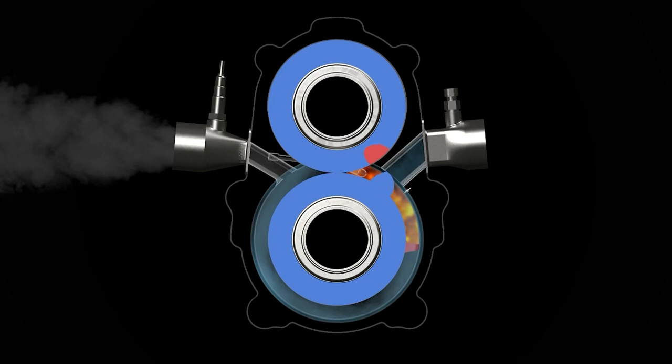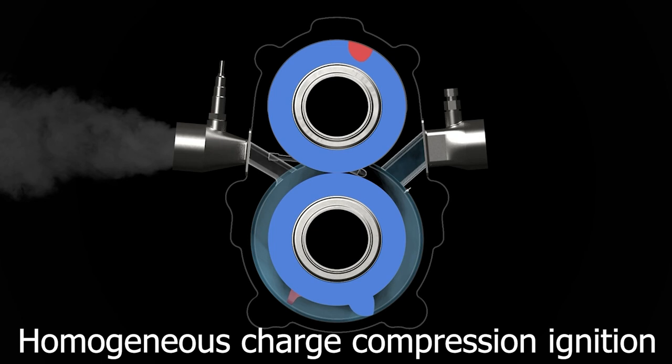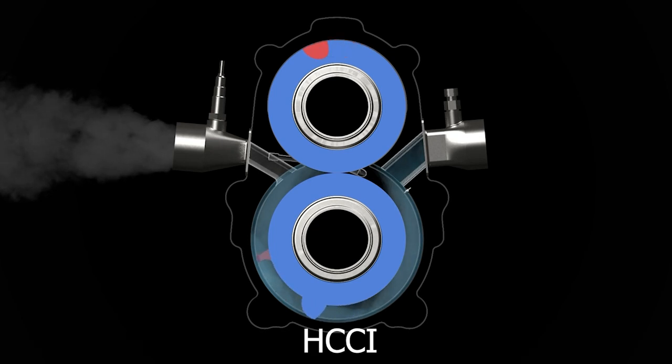Another thing that helps make sure that there is no bad emissions coming out of the engine is the fact that this engine can run with a homogeneous charge compression ignition or HCCI. What does this mean? Well, HCCI is a form of internal combustion in which well-mixed fuel and an oxidizer, typically air, are compressed to a point of auto ignition.